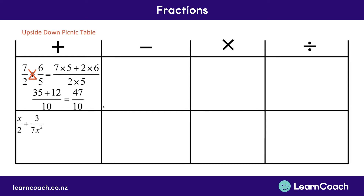Now let's look at an algebraic example. So up here we've used numbers; now we're going to look at an example with letters in it as well — we'll just use x. So here we have x divided by 2 plus 3 divided by 7x squared. Again, we're going to use our upside-down picnic table. We're going to multiply the bottom two terms together, and we're going to multiply each top term by its opposite bottom term. First we have the x up the top multiplied by 7x squared from its opposite side down the bottom. We also have the plus, which is still from the middle of the fraction, and we have the 3 up the top multiplied by the 2 from down the bottom — 2 times 3. And finally we have the bottom two terms multiplied together.